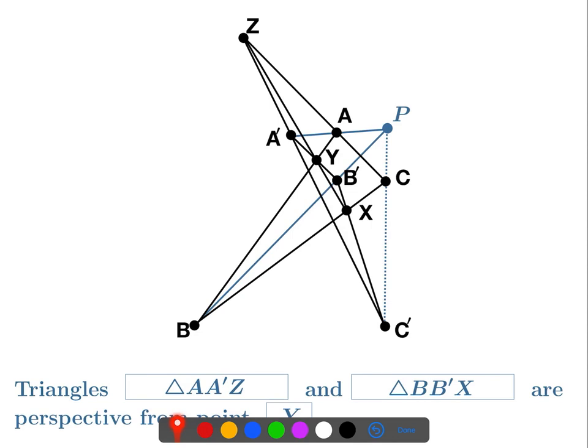And that's what we wanted — to show the line through C and C' goes through P. And it does. So this is a way to prove the dual Desargues' theorem using Desargues' theorem. We use Desargues' theorem to conclude that these three points are collinear and that the line through C and C' goes through P. That finishes this problem.